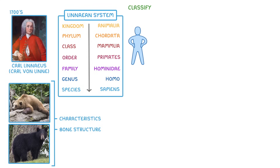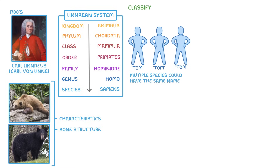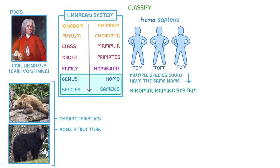Now, this is obviously too much to say every time you want to describe a species. But that last category of species often isn't enough, as multiple species could have the same one, just like how lots of people are called Tom. So Linnaeus instead proposed the binomial naming system, where we name species by their genus and species names. For example, humans would be Homo sapiens, as Homo is our genus name and Sapiens is our species name. Whenever you write a name like this, you should do it all in italic, and only capitalize the first letter of the genus name, like we've done here.